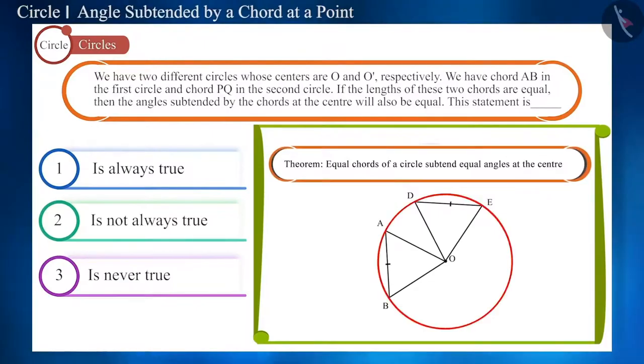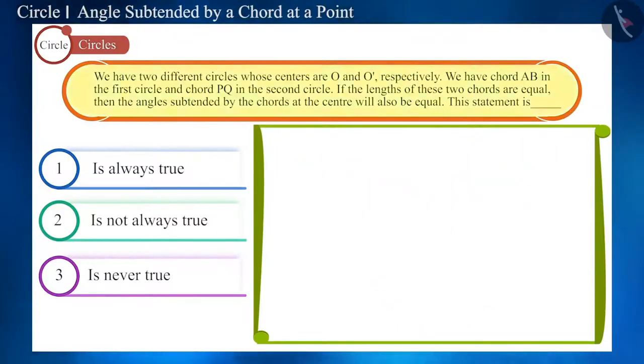We know that equal chords of a circle subtend equal angles at the center. In this question, we are given two equal chords, but in two different circles. We have not been given any information about their radius.